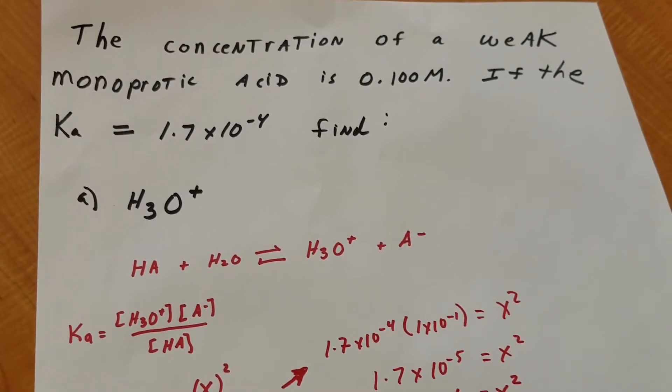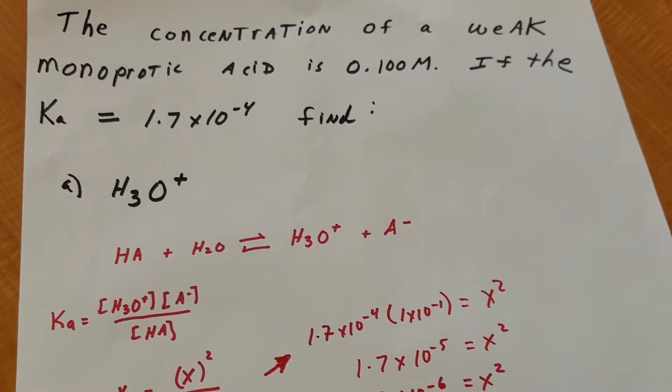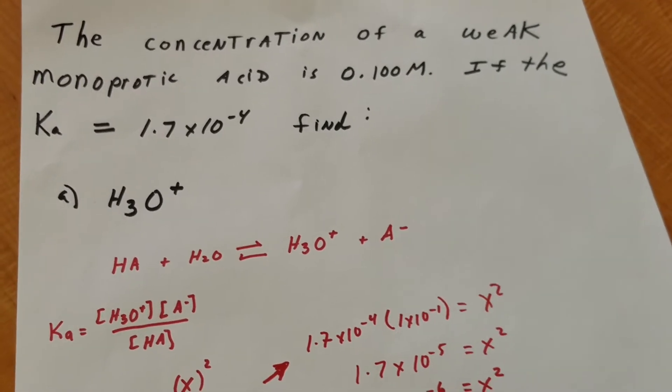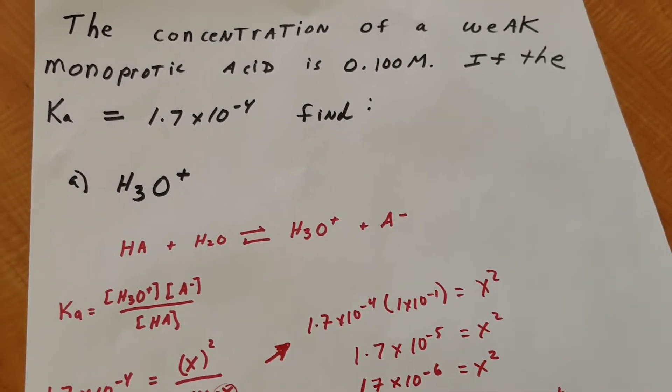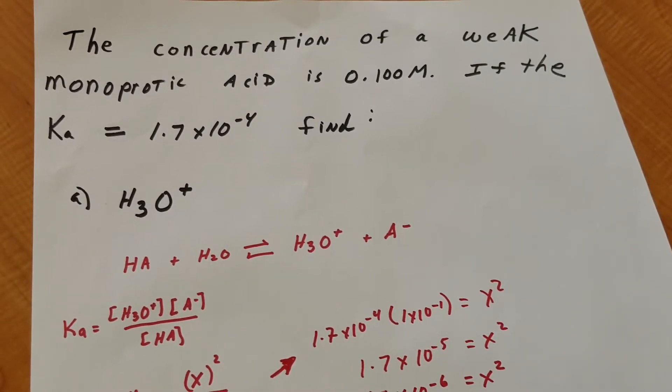It says that the concentration of a weak monoprotic acid is 0.100 molar, and the Ka is 1.7 × 10^-4. And I want to ask you three questions, and I worked it out for you, but I'll go through it.